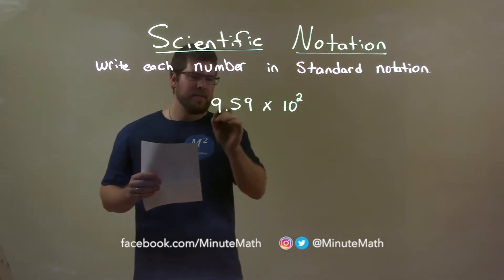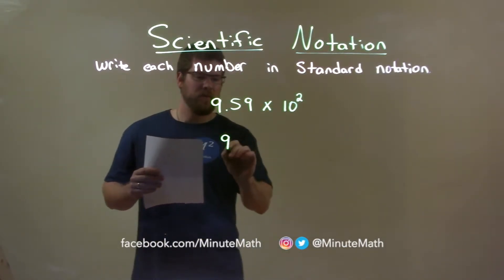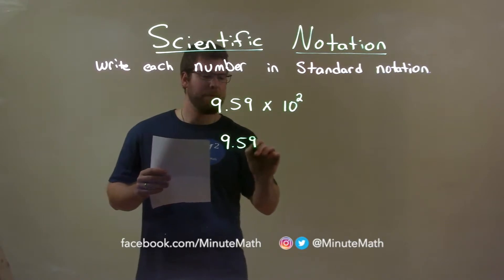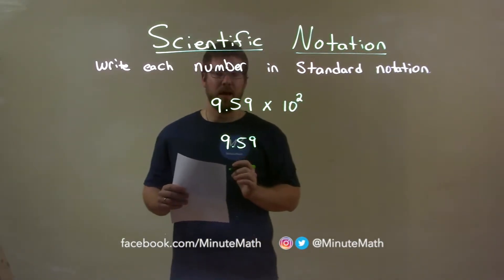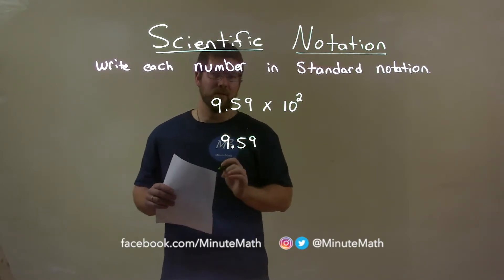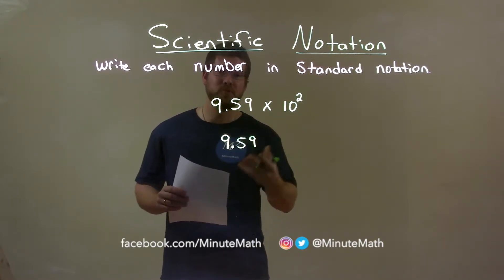First thing I'd like to do is I take the 9.59 and rewrite this, okay? Now, when we multiply that by 10 to the second power, that's really taking this decimal place and moving it to the right two spots.